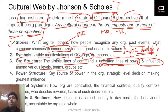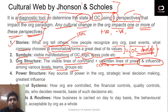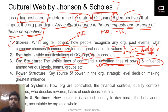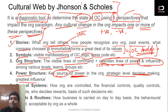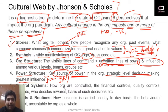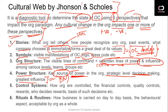Organizational structure includes both the formal structure and the unwritten lines of power and influence among various levels, teams, and groups. Every person has their own influential area which we call power. That area forms part of the unwritten lines of organizational structure because it influences the structure and channels the flow of power. Fourth is Power Structure — the source of power in the organization and how strategic-level decision making happens.